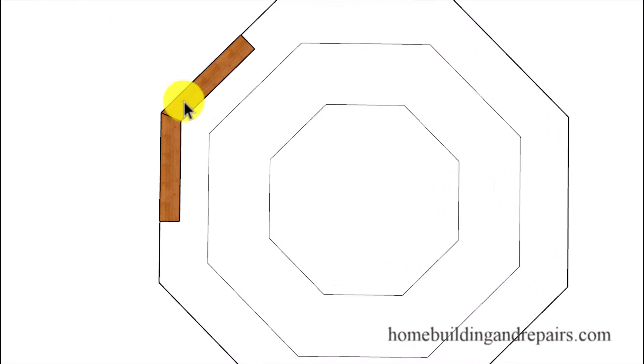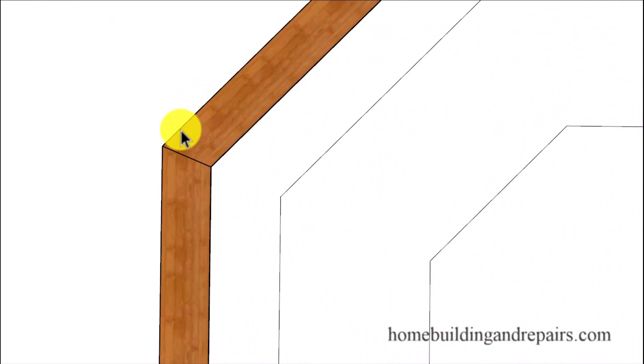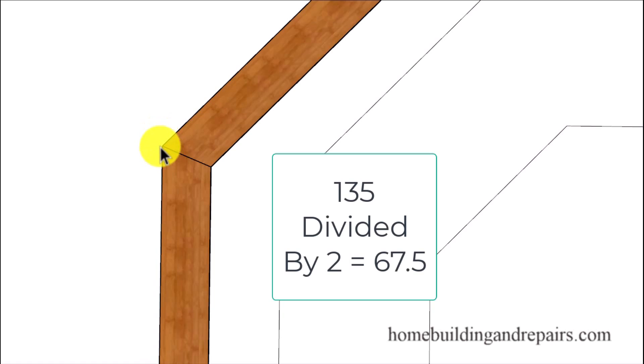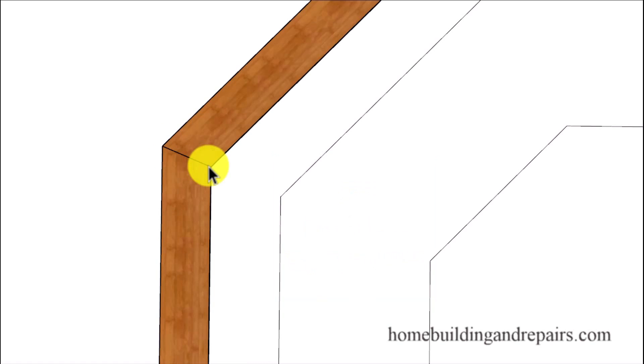Next up, let's go ahead and take a look at the miter joint. We have a 135 degree angle between this line and this line. If we divide that by two, we're going to end up with a 67.5 degree angle.